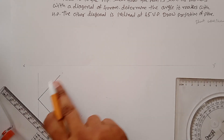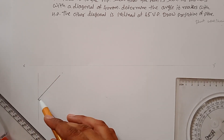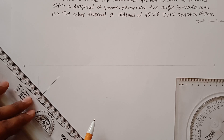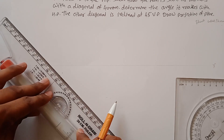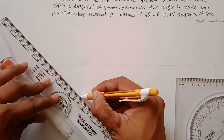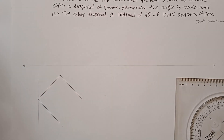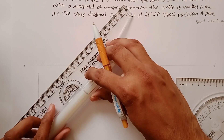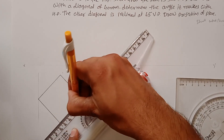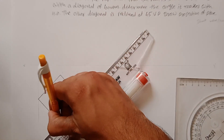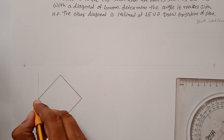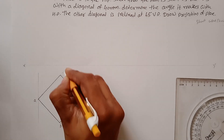Now complete a square. This is the corner we are talking about. To construct a square, simply draw parallel lines from the corner edges you have already drawn and complete your square. This is the square which is resting on HP at its corner. This point is A, this point is B, this is C, and this is D.